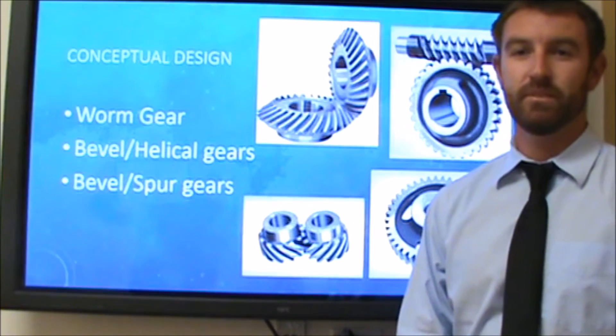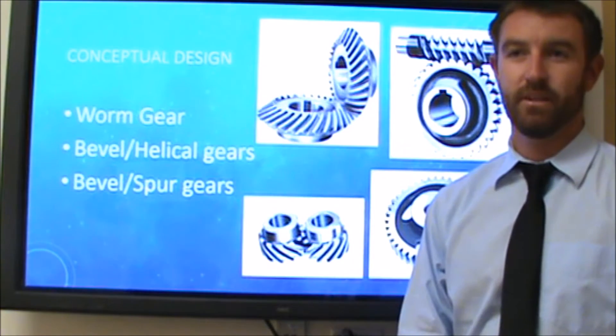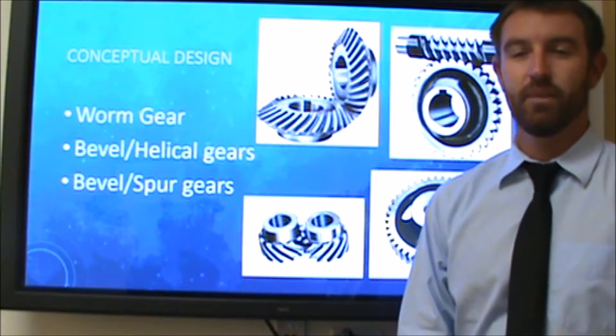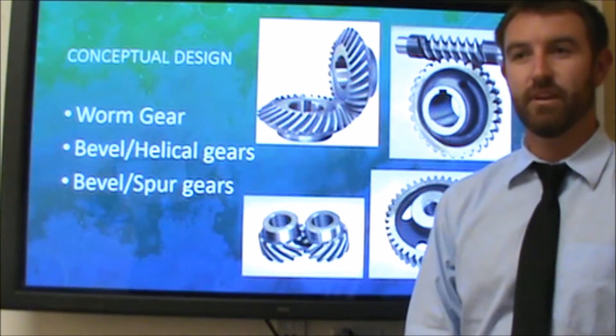The worm gear set would have been the simplest and most compact design because worm gears are able to achieve large gear reductions with a single gear set. The problem with the worm gear was that the Boston Gear Catalog did not have a strong enough gear set for our application.